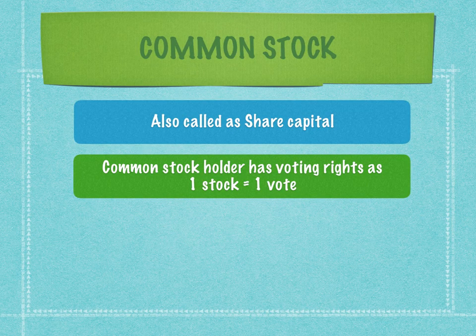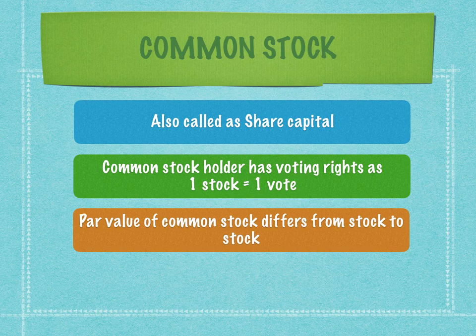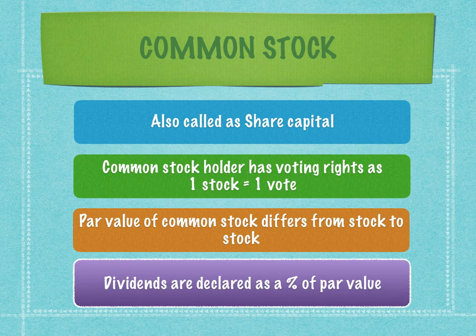A common stockholder has voting rights where one stock equals one vote. So if I am a shareholder of 1,000 stocks of a particular company, then my vote is equivalent to 1,000 votes at that particular AGM or event. The par value of common stock differs from stock to stock and is determined by SEBI — the Securities Exchange Board of India — and the par value determines dividend payouts. Dividends are declared as a percentage of par value, so to calculate dividend entitlements you need both the par value and the dividend percentage rate.